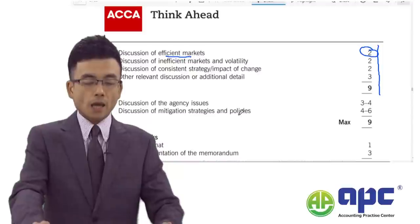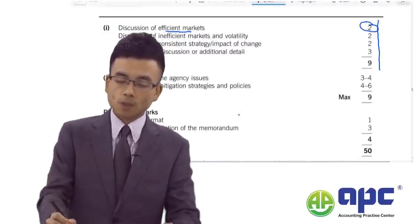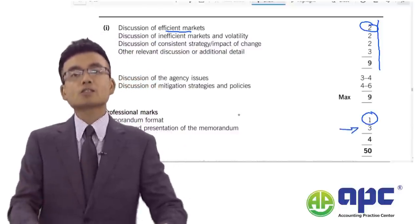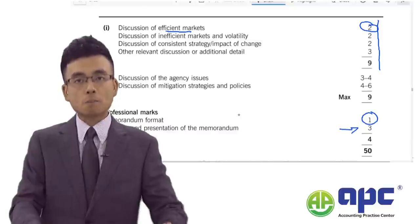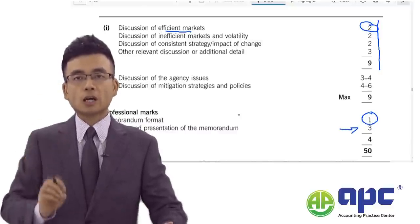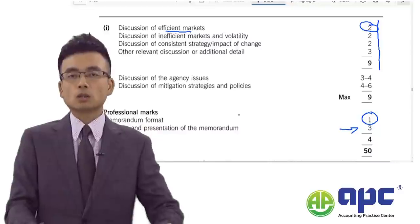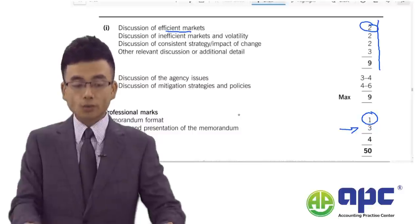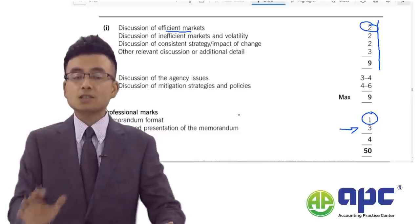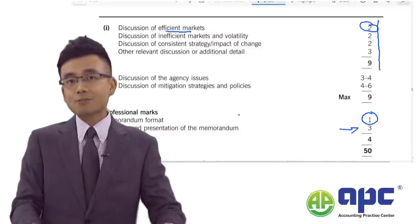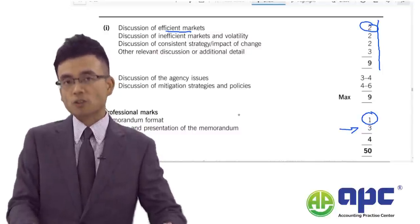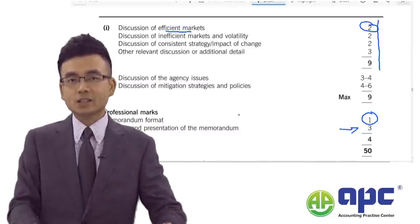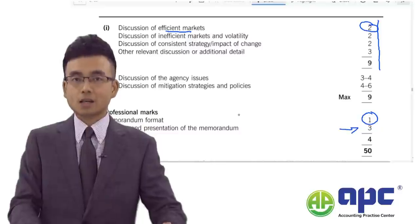Regarding professional marks — one mark is for structure or format, and three marks depend on the marker. Showing your answer clearly, applying the right techniques in the comment section, and using the correct format means you can easily score two out of four professional marks. I have not seen students score four out of four professional marks, so being realistic is the key to AFM exam success.